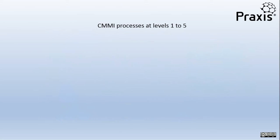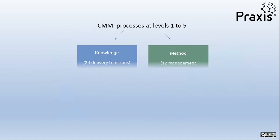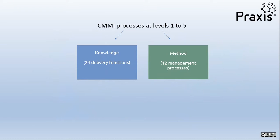In the CMMI model, lower level processes are more specific and higher level processes are broader and more integrative. Praxis contains a body of knowledge made up of functions covering specific areas such as stakeholder management or risk management, and also a method based on lifecycle processes that broadly utilize and integrate knowledge functions. So the Praxis model adapts the CMMI approach by using the functions to measure capability and the lifecycle processes to measure maturity.